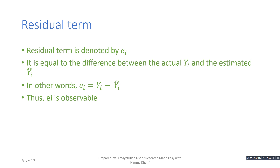The residual term is denoted by e_i, and it is basically equal to the difference between the observed or actual y_i and the estimated or predicted y_i. The estimated or predicted y_i is given by y_i-hat. In other words, e_i is equal to y_i minus y_i-hat. That is why e_i is observable — because we have data on the actual y_i's and we also have data on the y_i-hats.